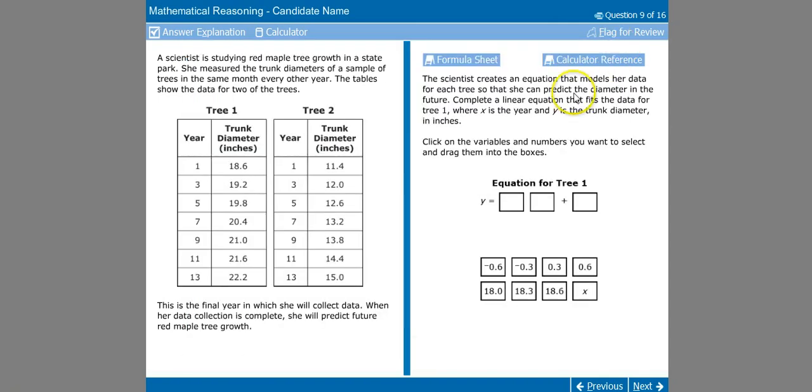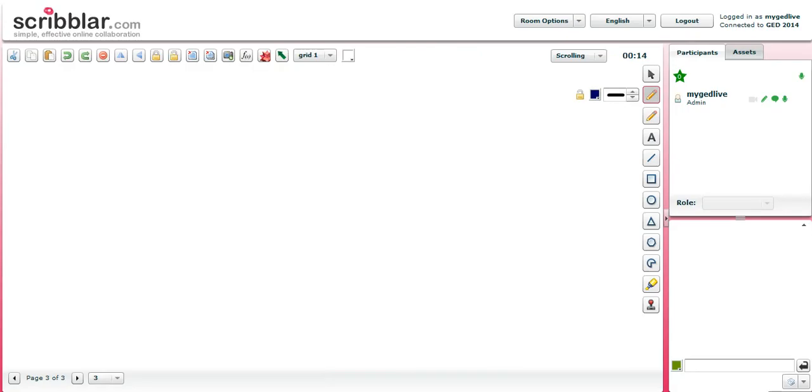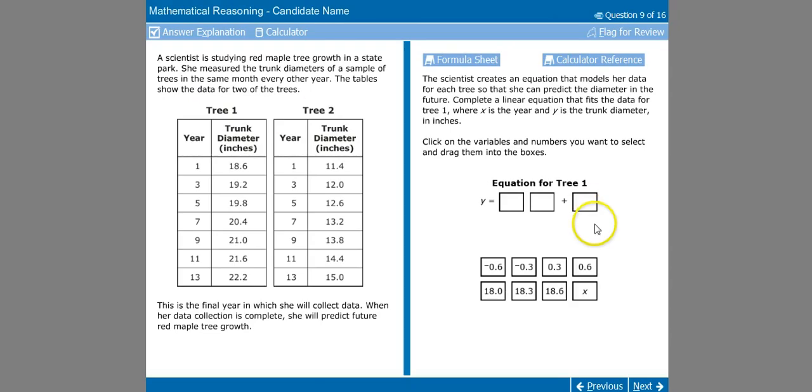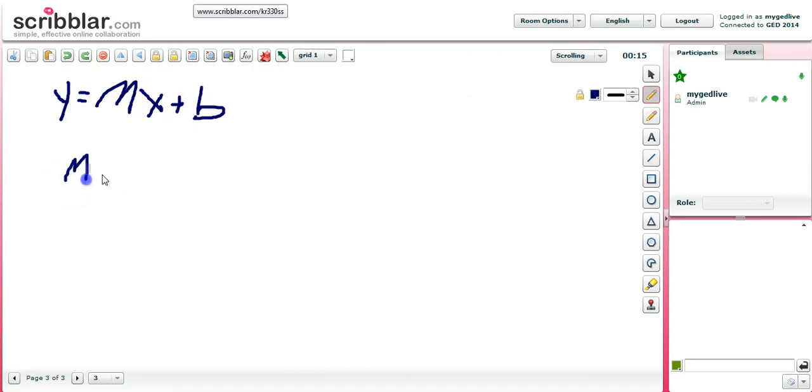So we know that's the formula we're going to use. I'm going to come over here to my scribbler board and write out that equation, Y equals MX plus B. Coming back here to the question, we need to put Y equals MX plus B, but we don't know what M is. We don't know what X is and we don't know what B is yet. So let's go ahead and find M. The M is the slope, and the formula for finding out the slope is Y2 minus Y1 all over X2 minus X1.